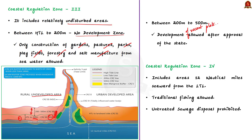CRZ 4 includes areas 12 nautical miles seaward from the low tide line — in other words, CRZ 4 is nothing but the territorial waters of the country. In this area, traditional fishing is allowed but discharge of untreated sewage is prohibited. These are the different zones categorized under the CRZ notification.